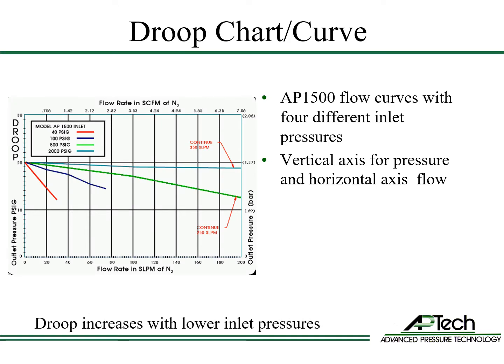This is a typical droop curve or flow curve. At the top, it indicates the gas used — in this case, nitrogen. Flow curves plot outlet pressure on the vertical axis and flow on the horizontal axis. This AP1500 regulator flow curve demonstrates the impact of four different inlet pressures with a 20 psi fixed zero-flow outlet pressure setting.